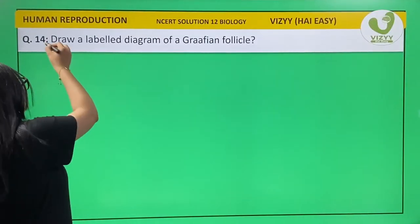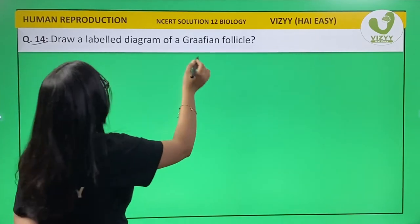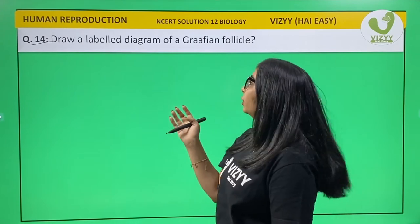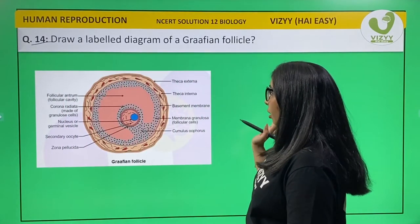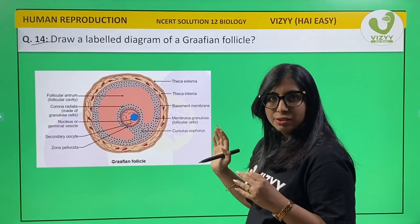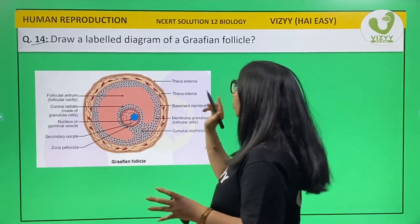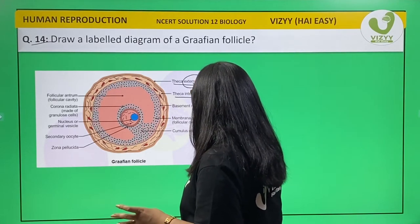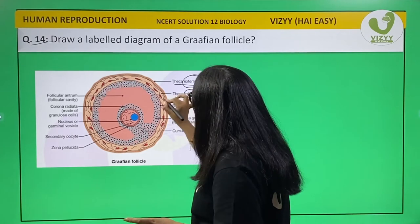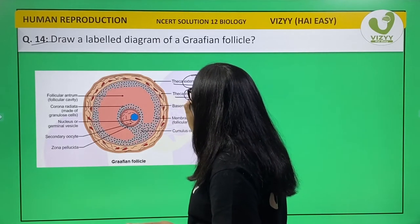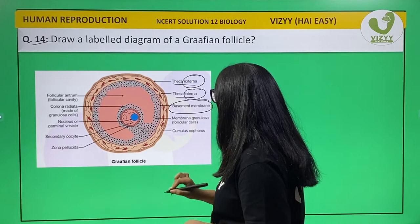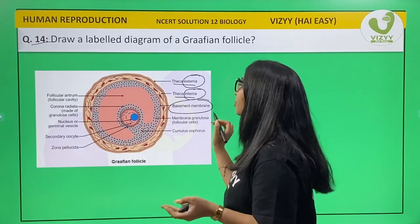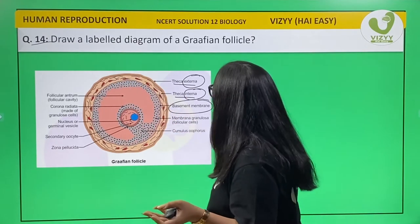Question number 14: draw a labeled diagram of a Graafian follicle. Important things to note — the external theca, internal theca, and the inner membrane of the internal theca will be the basement membrane. It also has follicular cells covering it.